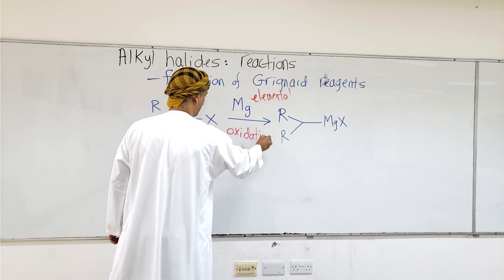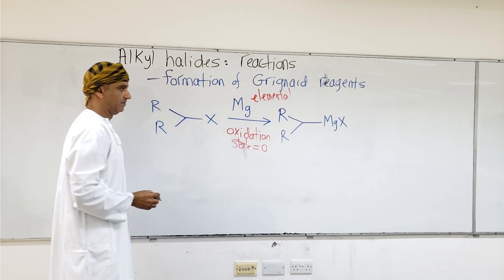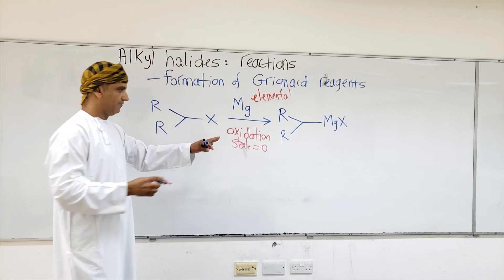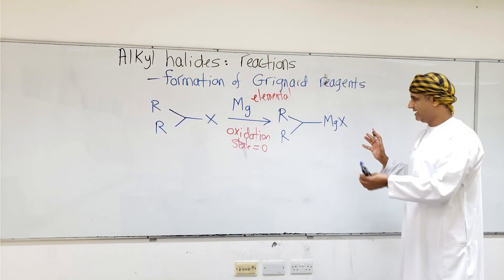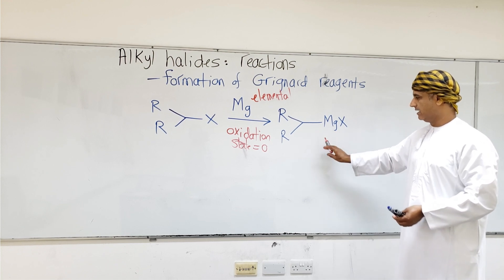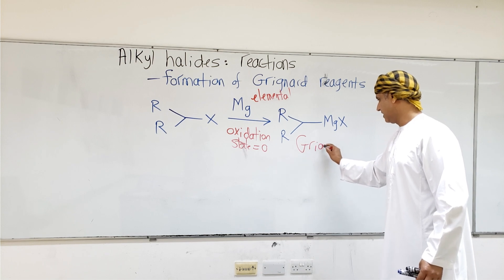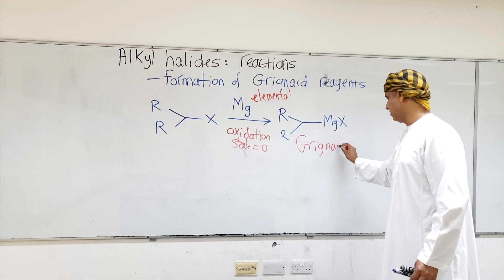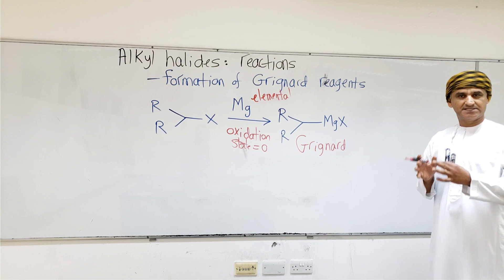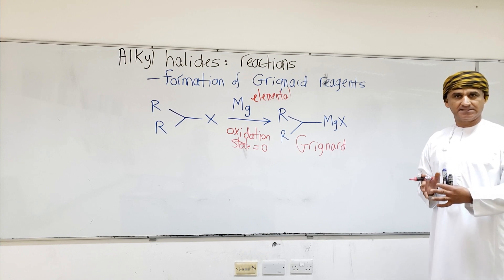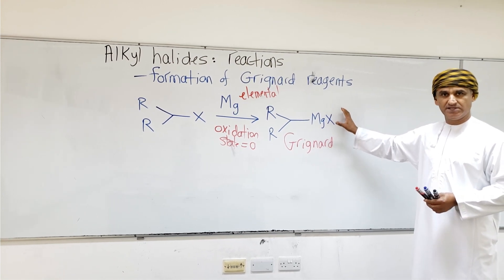The oxidation state of magnesium has to be zero. These kinds of products — or reagents, as they are called — are named Grignard reagents, after the scientist Victor Grignard who developed them.